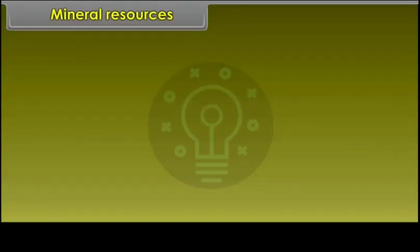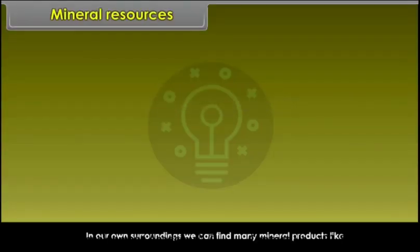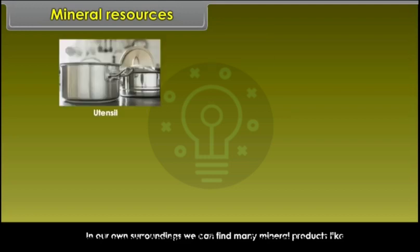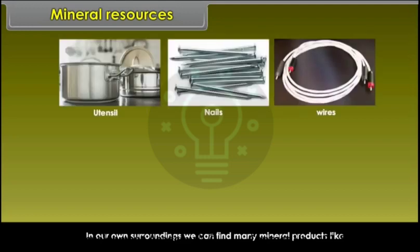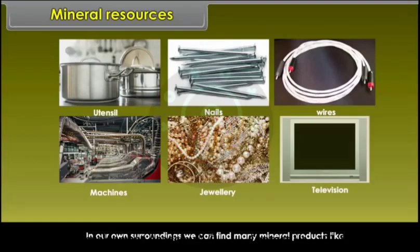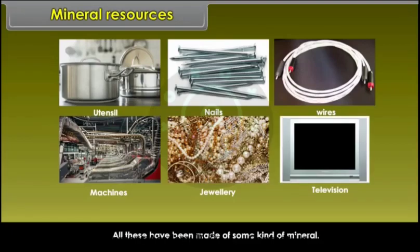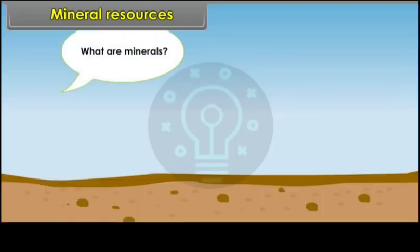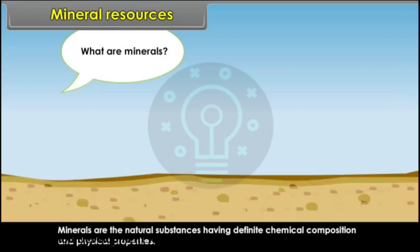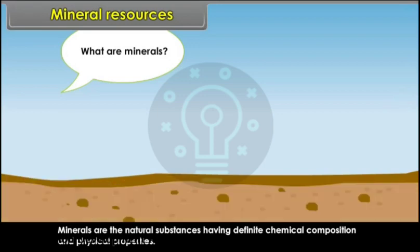In our own surroundings, we can find many mineral products like utensils, nails, wires, machines, jewellery and television. All these have been made of some kind of mineral. What are minerals? Minerals are the natural substances having definite chemical composition and physical properties.